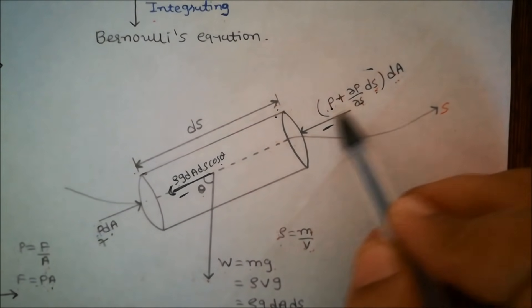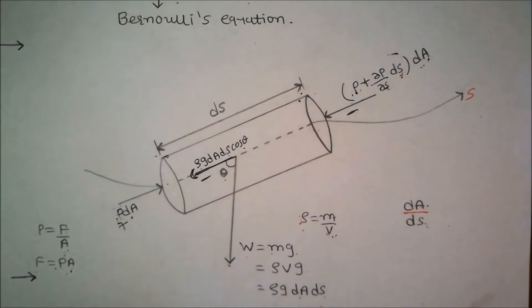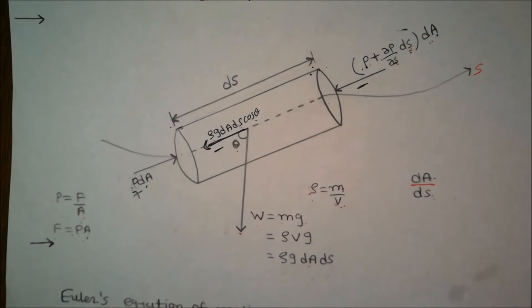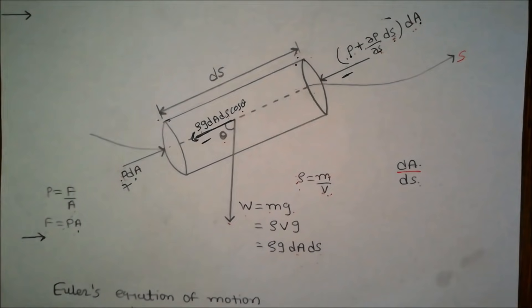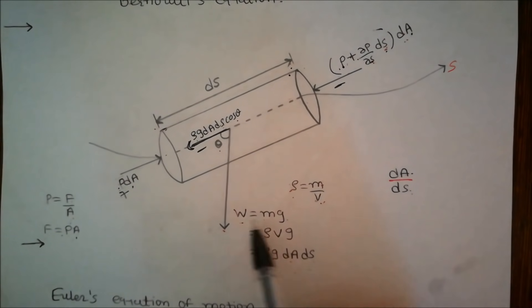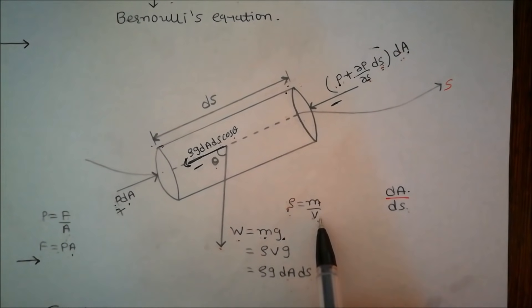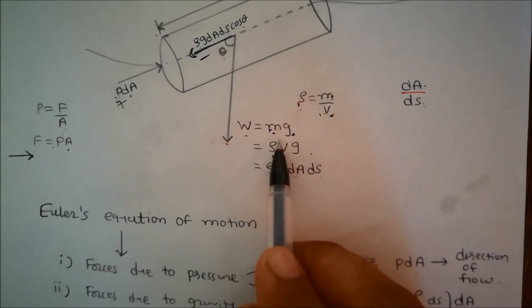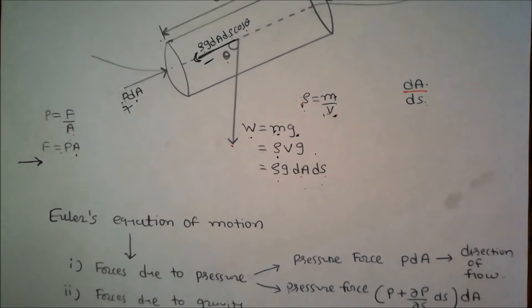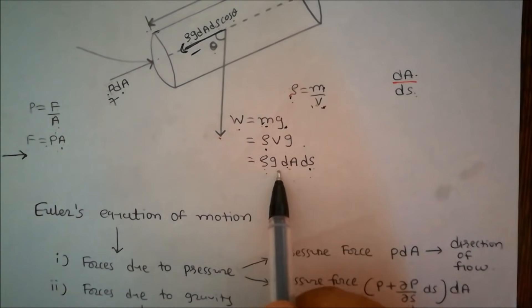This opposing pressure force is pressure times area. The third force is due to gravity — weight acts downward. Weight equals mg. Since density ρ = mass/volume, mass = ρ·volume = ρ·dA·dS. Therefore, weight W = ρ·g·dA·dS.